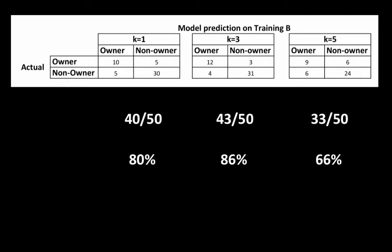Now there's actually an assumption here: we are saying that any error is the same. That is, the error of classifying an owner as a non-owner is exactly the same as the error of classifying a non-owner as an owner. In other words, we are only considering the overall error rate or overall performance rate.